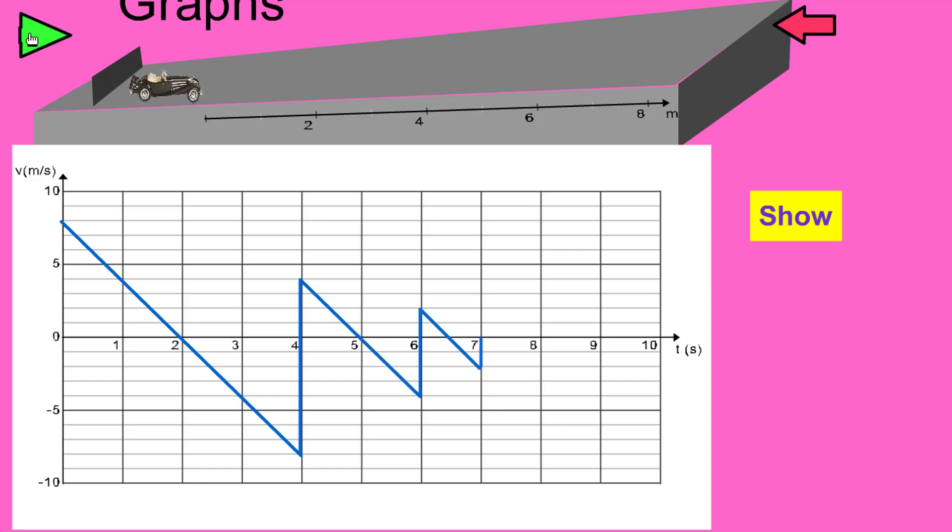We can see the car had three bounces, and we can see that after each bounce the car didn't go as far up the slope as the previous bounce. We'll explain that in a minute, but first let us look at the graph because it's quite complicated, so let's break it down.